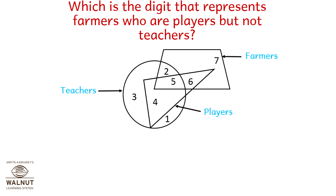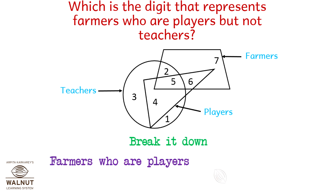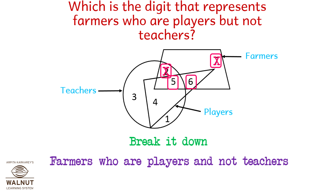Which is the digit that represents farmers who are players but not teachers? Let us break it down. The farmers are 2, 5, 6, and 7. Farmers who are players are 5 and 6 — cancel out 2 and 7, keep 5 and 6. Who are the farmers who are players and not teachers? 5 comes in teachers, so cancel out 5. That leaves us with the answer: 6.